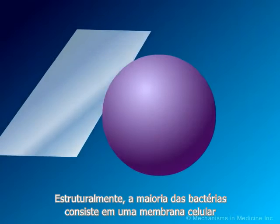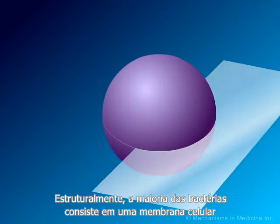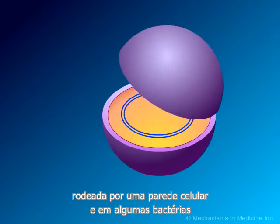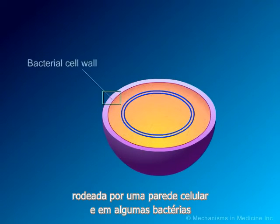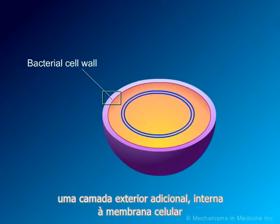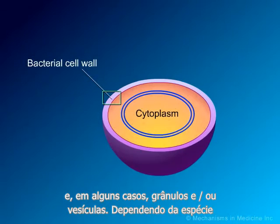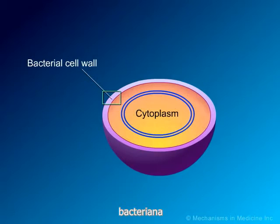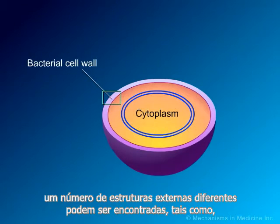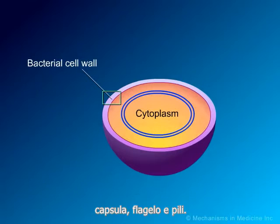Structurally, most bacteria consist of a cell membrane surrounded by a cell wall, and for some bacteria, an additional outer layer. Internal to the cell membrane is the cytoplasm, which contains ribosomes, a nuclear region, and in some cases granules and/or vesicles. Depending on the bacterial species, a number of different external structures may be found, such as a capsule, flagella, and pili.